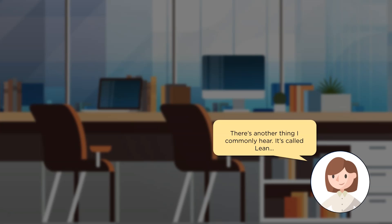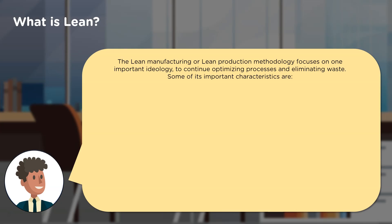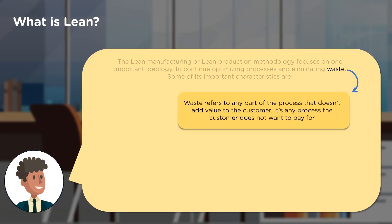Jenny wants to know about Lean. Lean, just like Six Sigma, is another methodology. Lean is a methodology with a very important ideology: continuous optimization of processes and the elimination of waste. Waste is basically any part of the process that the customer doesn't want to pay for — a process that does not add any value to the customer.